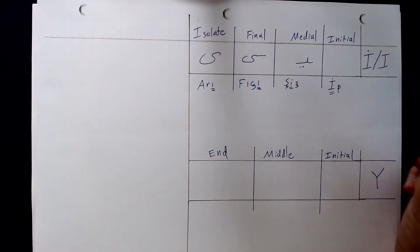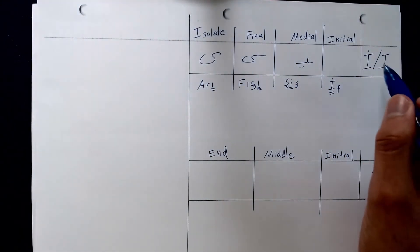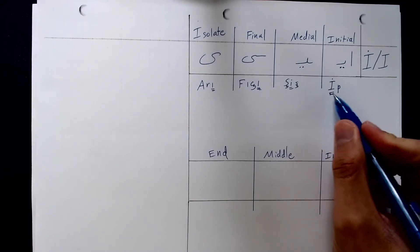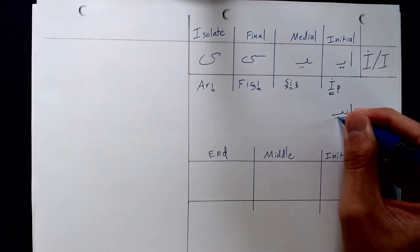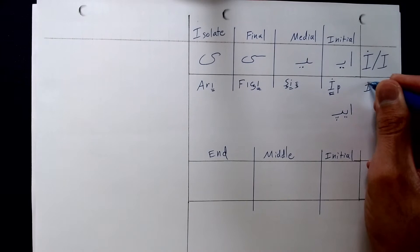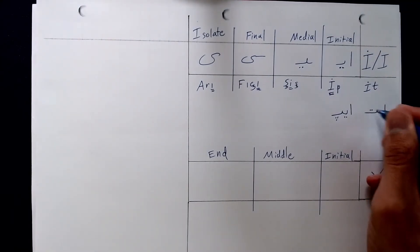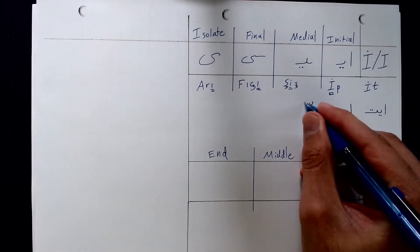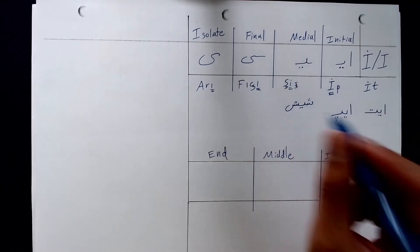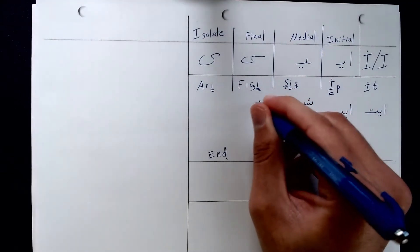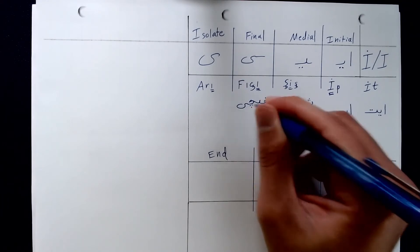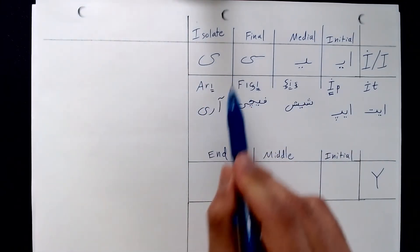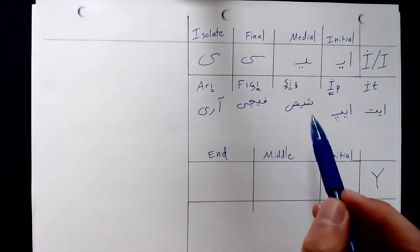The next letters to cover are I and Ö. We represent them using the letter Y, and in the initial position, in order to indicate the vowel, we must first place an Elif and then begin with the Y. So if we want to write If or It, we write them accordingly. In other forms it's quite regular: Shish, Fch, and Ör — you can see how these match up with the isolated, final, and medial forms. It's quite regular.